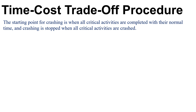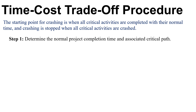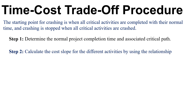Let us see the procedure step by step. The first step is to determine the normal project completion time associated with the critical path. Step 2 is to calculate the cost slope for the different activities using the following relation: cost slope equals crash cost minus normal cost, divided by normal time minus crash time.